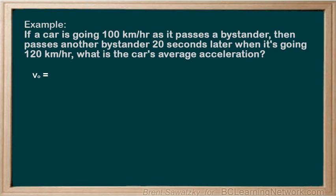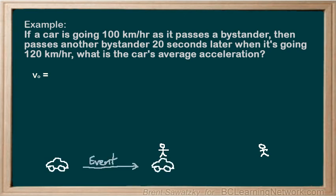When we say event, we're talking about a period of time over which a change has taken place. We could consider an event to have happened from when the car started originally to when it got to the first bystander — that would be a legitimate event. We could also consider an event to be from the passing of the first bystander to the passing of the second bystander, and this is also a legitimate event.